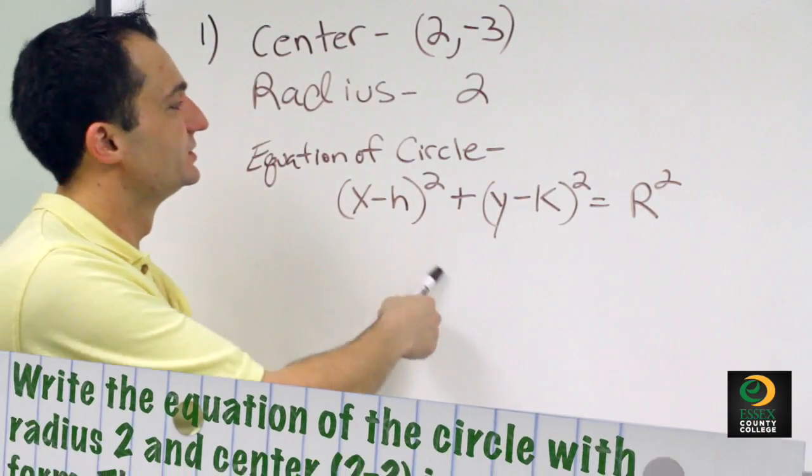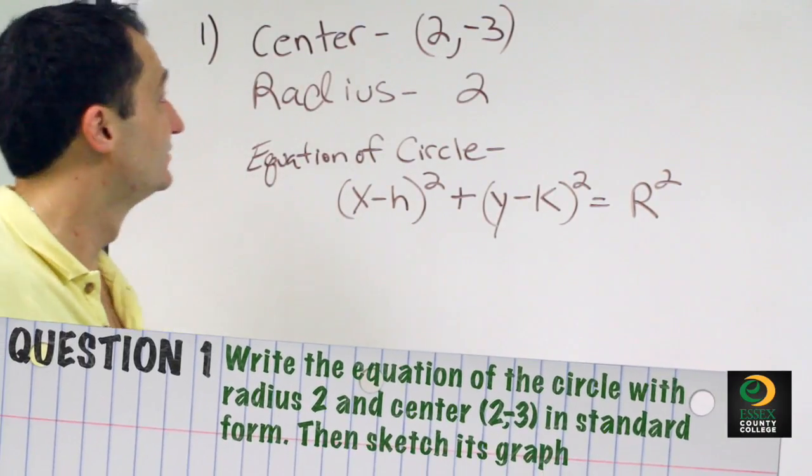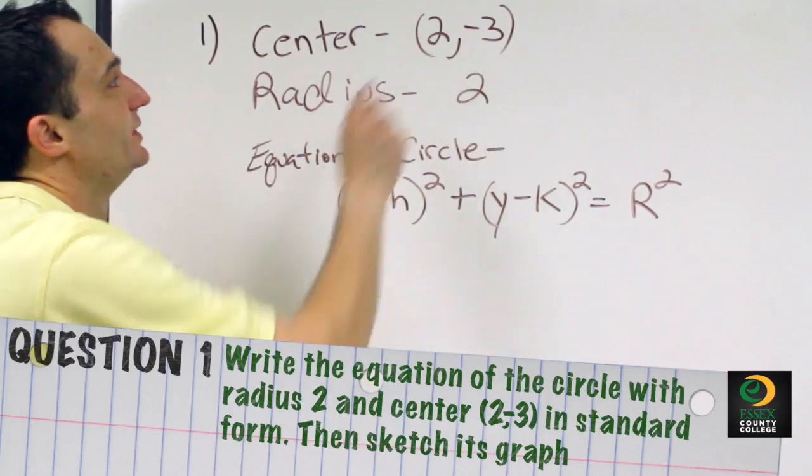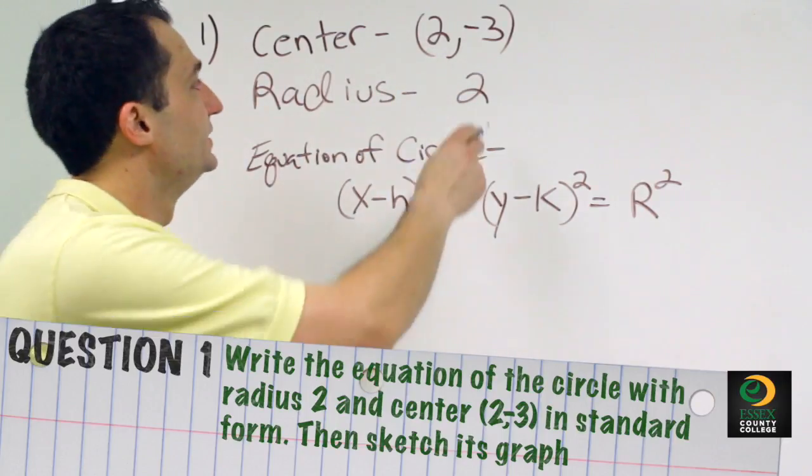Problem number 1 asks us to write the equation of a circle and then sketch its graph. It has a center of 2, negative 3 and a radius of 2.